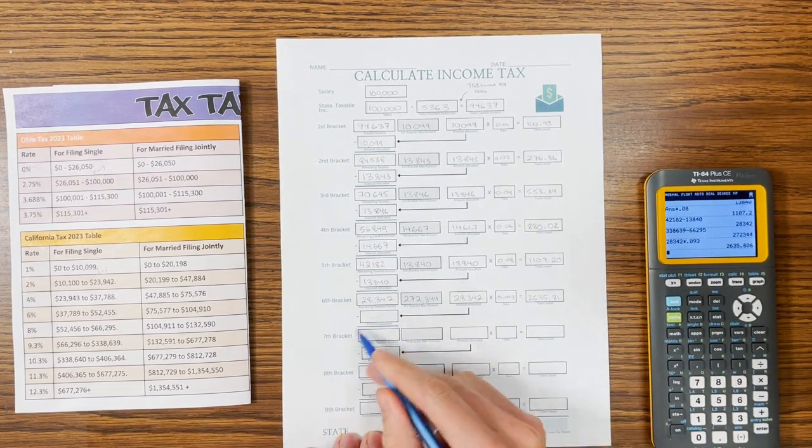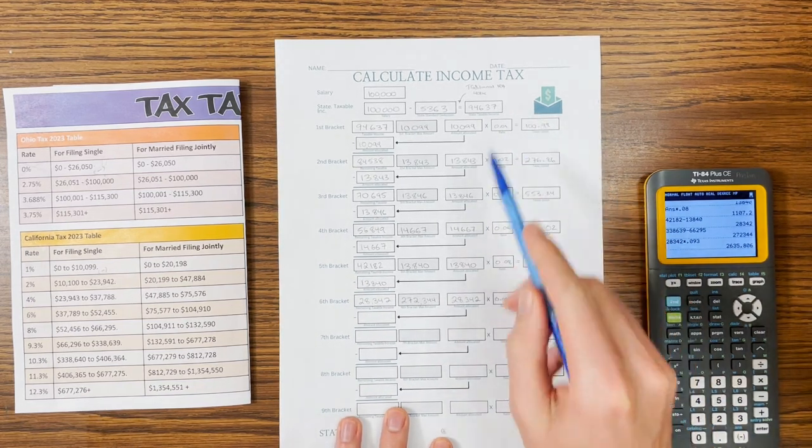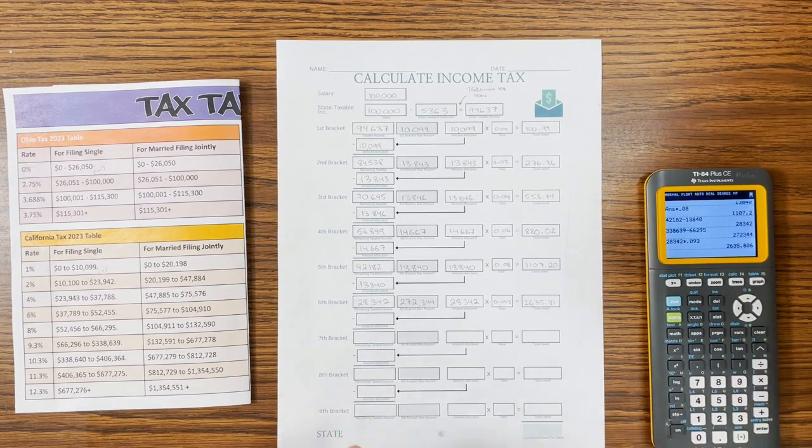There's nothing left, so nothing goes into the seventh, eighth, or ninth brackets. And we're just going to add up our total taxes owed. So each of the individual brackets has taxes owed for each one.